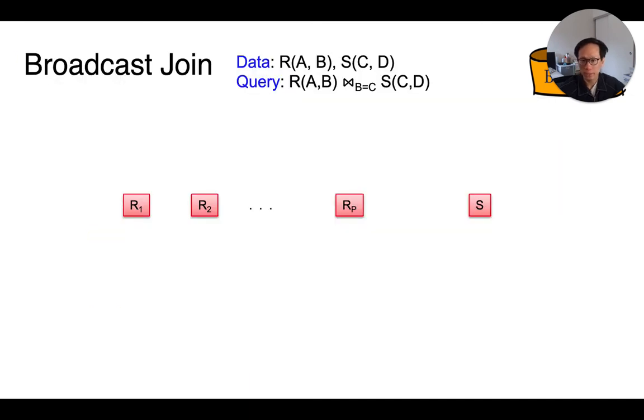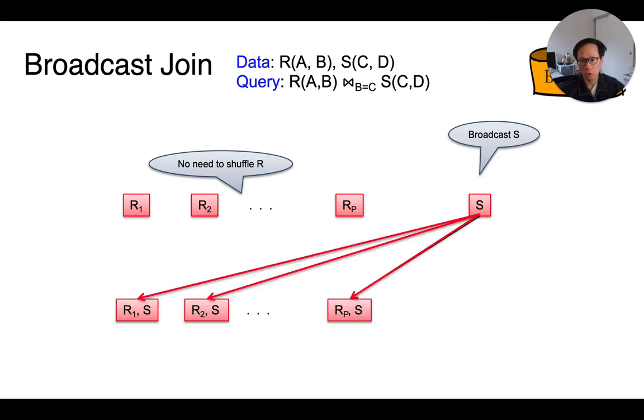Another parallel join algorithm that we learned earlier in the course is broadcast join. Here, suppose we have again two relations, R and S, and we want to do an equi-join on B equals to C. Now, rather than shuffling the tuples from both relations, here we actually don't shuffle any of the R tuples sitting on their partitions. Instead, we send the entire relation S, or otherwise known as broadcasting it, to all the machines, and we ask each of those machines to do the join locally, just like before.